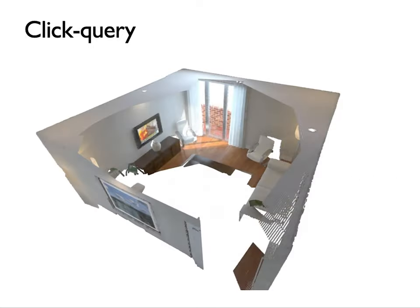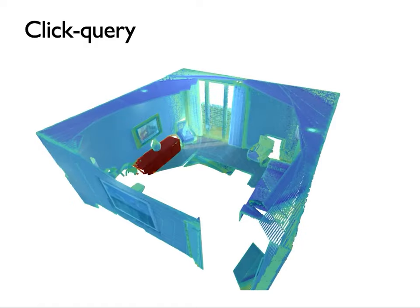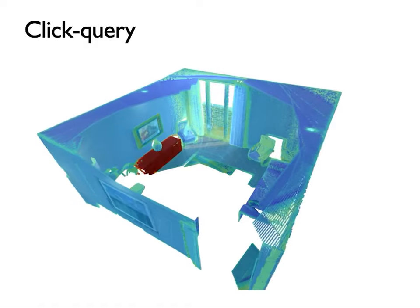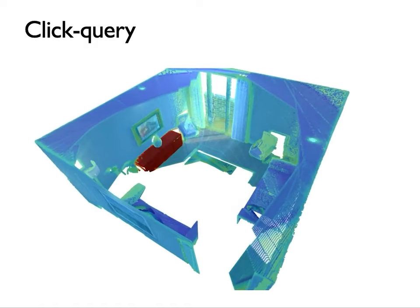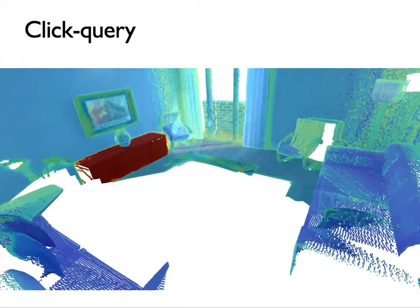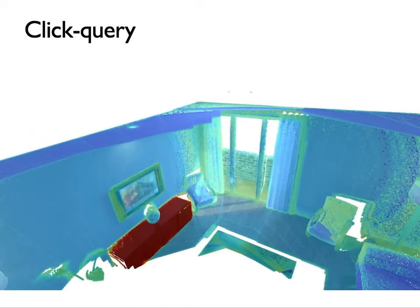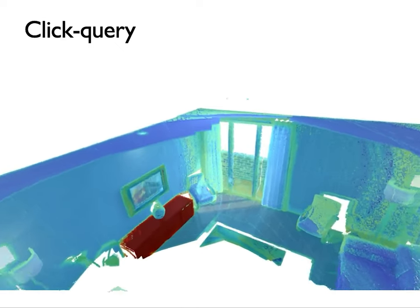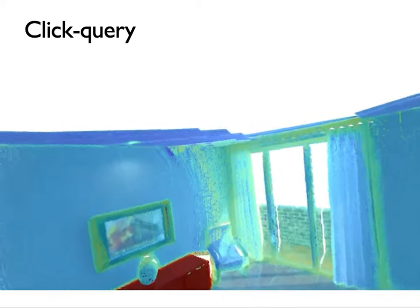And of course, we can also click on points within the reconstruction to find other points similar to it. Here, we click on the cabinet, and the points with the highest similarity are colored red while the points with the lowest similarity are colored blue.